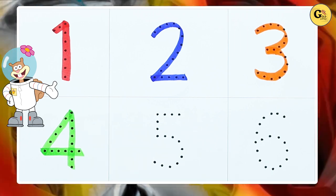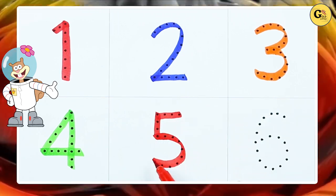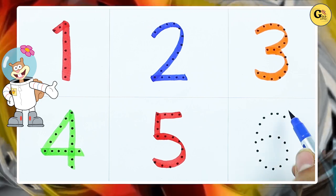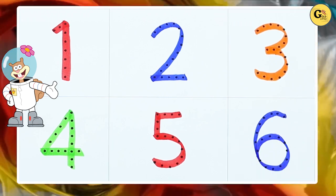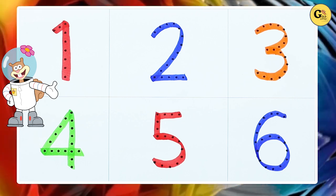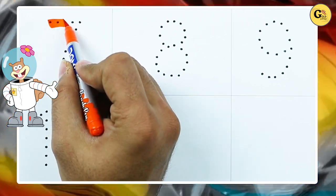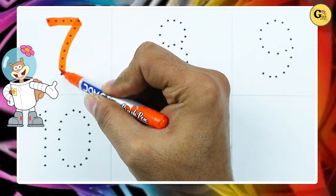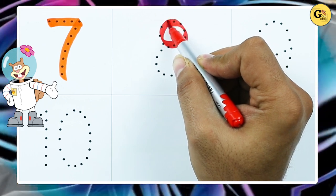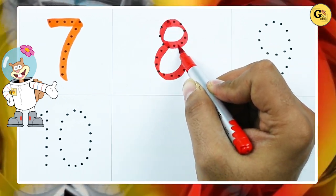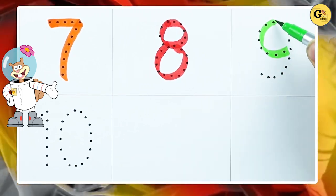It's number 5 with red color, number 5. It's number 6 with blue color, number 6. Number 7 with orange color, it's number 7. Number 8 with red color, it's number 8. Number 9 with green color.